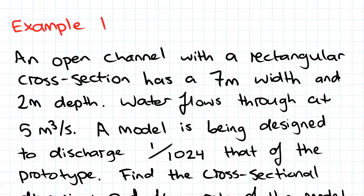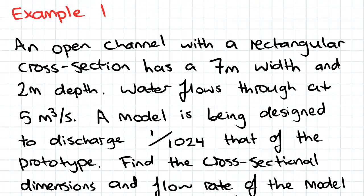So here's our example. An open channel with a rectangular cross-section has a 7 meter width and 2 meter depth. Water flows through at 5 meters cubed per second.